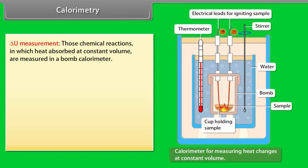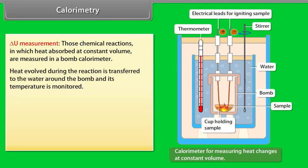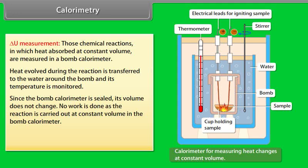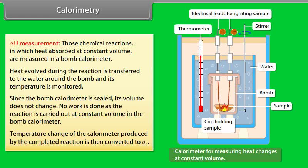Delta U measurement: Chemical reactions in which heat is absorbed at constant volume are measured in a bomb calorimeter. The steel vessel is immersed in a water bath to ensure no heat is lost to the surroundings. A combustible substance is burned in pure dioxygen supplied in the steel bomb. Heat evolved is transferred to the surrounding water and its temperature is monitored. Since the bomb calorimeter is sealed, its volume does not change, so no work is done — the reaction is carried out at constant volume.